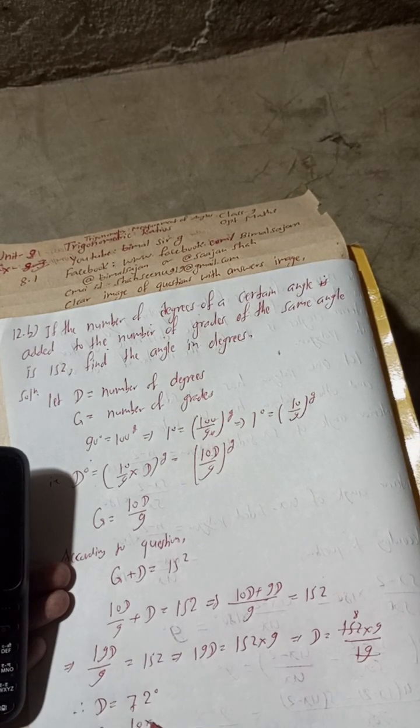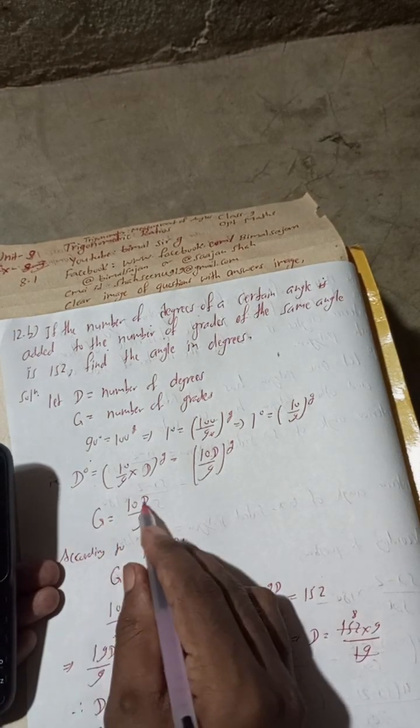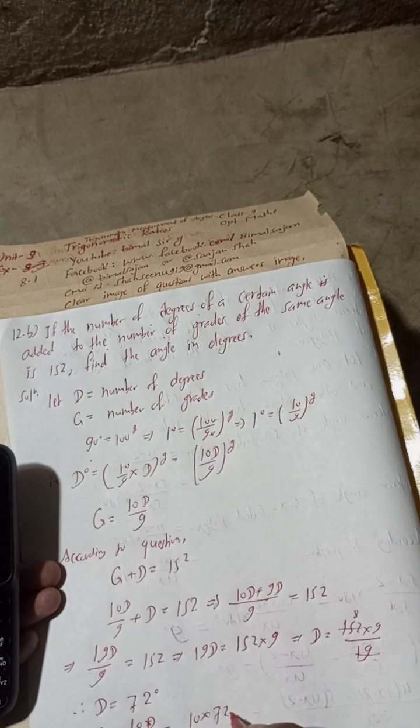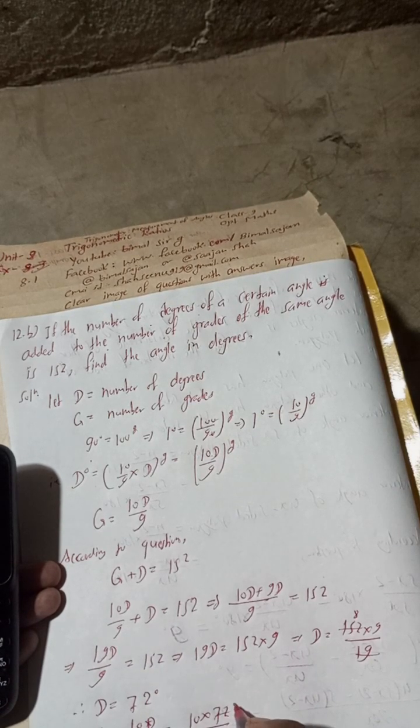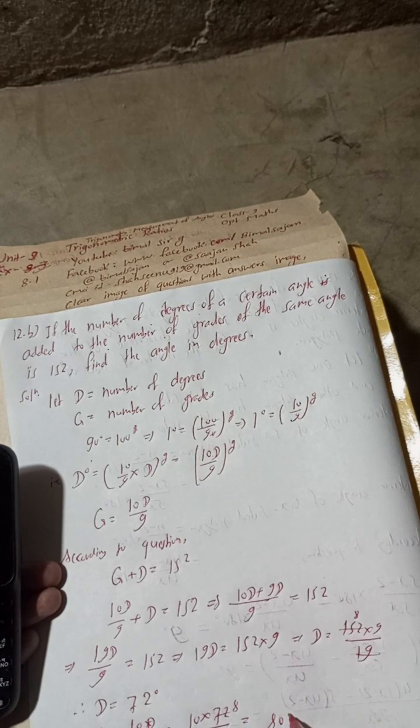Now G equals 10D by 9, so G equals 10 times 72 divided by 9. 9 into 8 is 72, so 10 into 8 is 80. We got 80 grades.